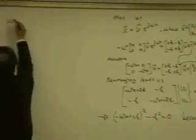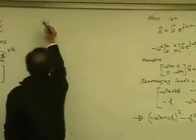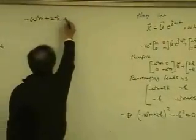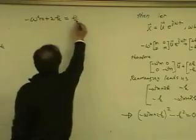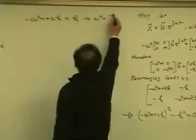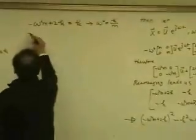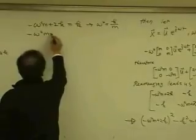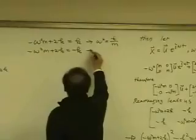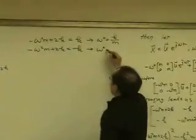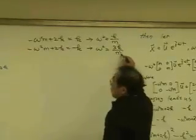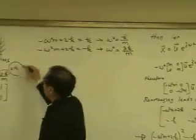One solution is minus omega square m plus 2k equals k. That gives me omega square equals k over m. And the other solution is, therefore, omega square equals 3k over m. Therefore, this is correct.